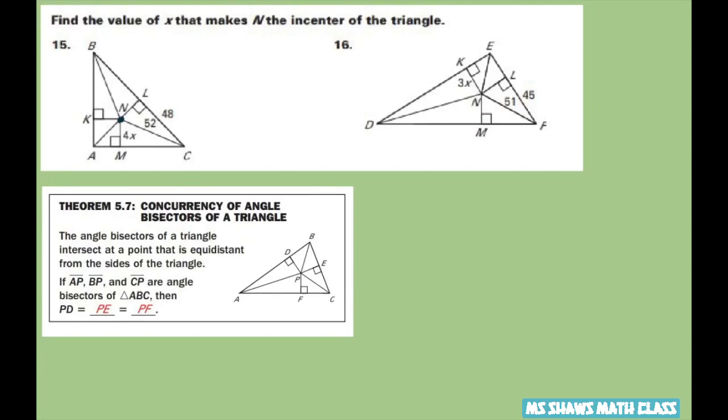We're using the concurrency of angle bisectors of a triangle. So that means if these lines bisect the angles such that these sides here are perpendicular and you draw them straight down or straight across, then these sides are congruent.